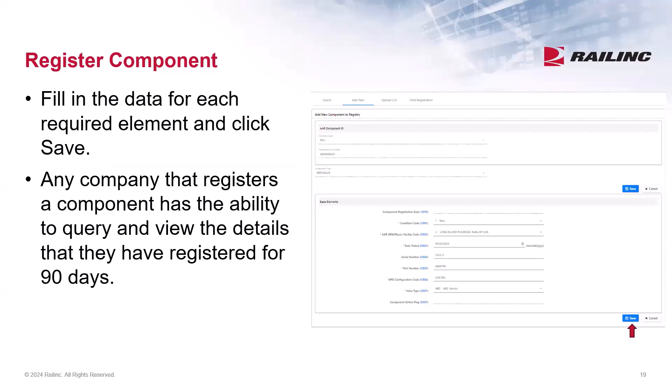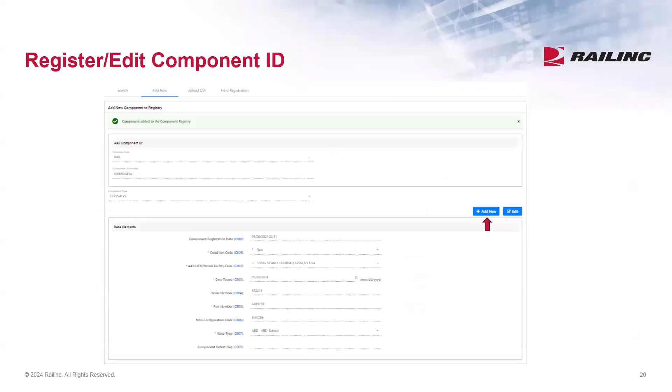Fill in the required data and press Save. Any company that registers a component has the ability to query and view the details that they have registered for 90 days. After you press Save, a confirmation message is displayed confirming the component was added. If you need to add another component, select Add New right from here. If you need to edit the current component, select Edit. But if finished, select another tab from the main menu to exit from the screen.